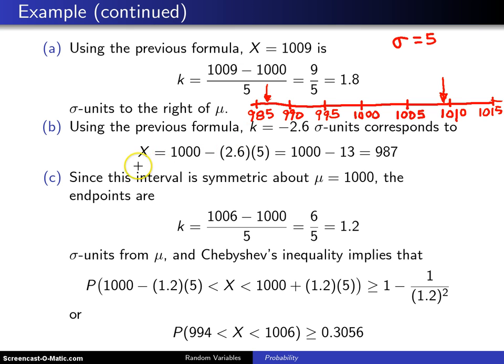So how is that calculated? We use the second formula this time. X is equal to mu, which is 1000. And then we put in our K value here, which is negative 2.6 times the standard deviation, which is 5. 2.6 times 5 is 13. 1000 minus 13 is 987. So parts A and B show that we can convert from specific values of X to sigma units, and from sigma units to specific values of X.